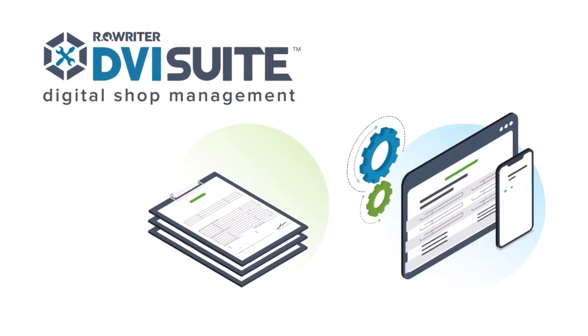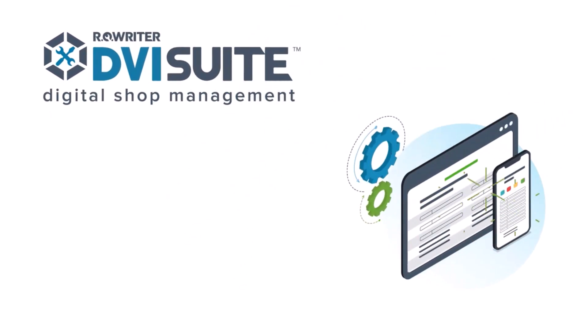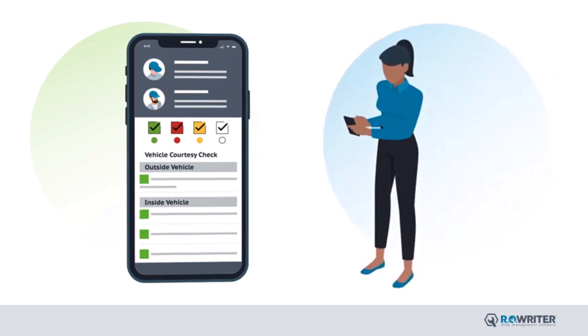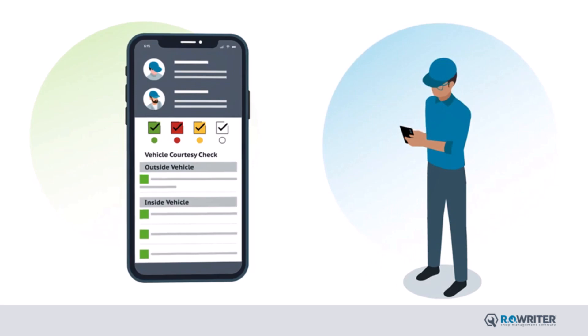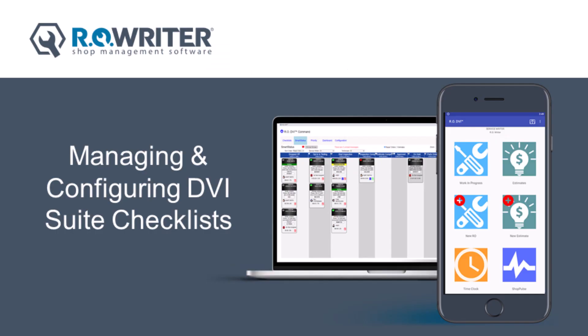DVI Suite allows for digital inspections through checklists. DVI Suite's checklists are designed to be sent via text or email to your customer, allowing them to make an educated decision on the services needed for their vehicle. The checklists allow for standardization of vehicle inspections while also allowing the service writer to quickly identify vehicle needs found by the technician. To get the most out of DVI Suite, we will review how you can configure checklists to better suit your shop's inspection needs.